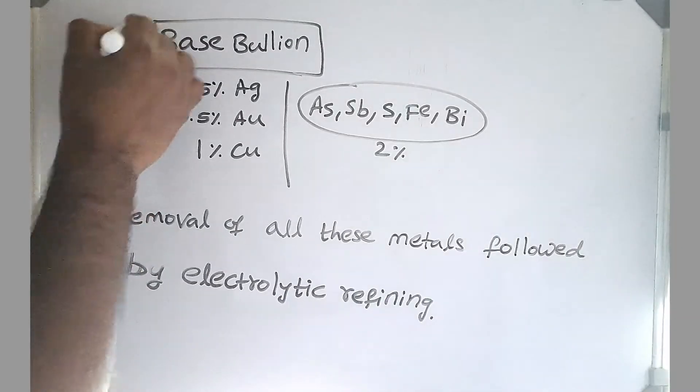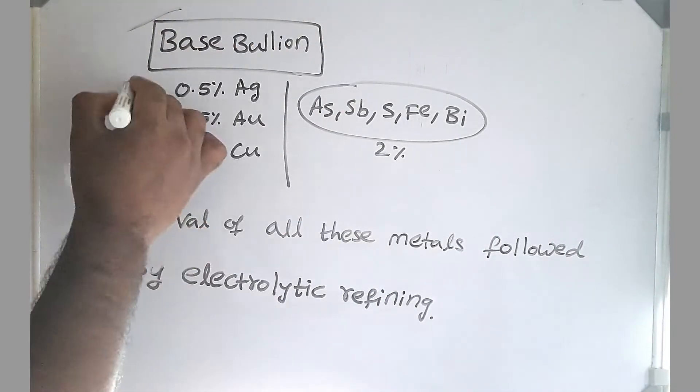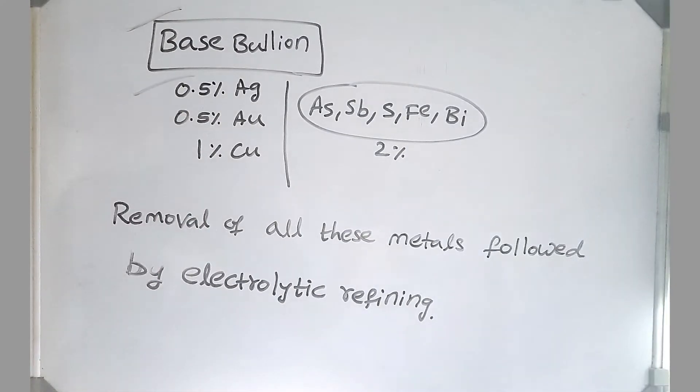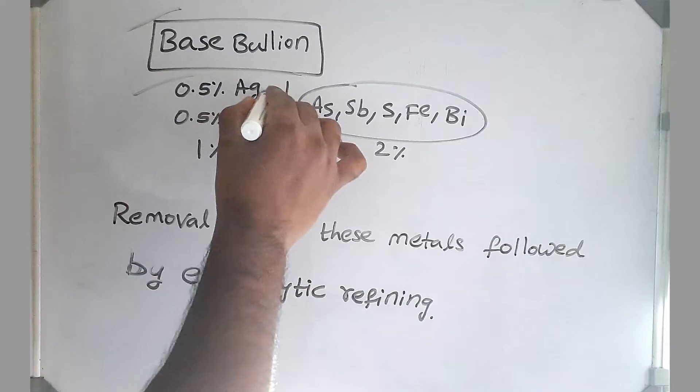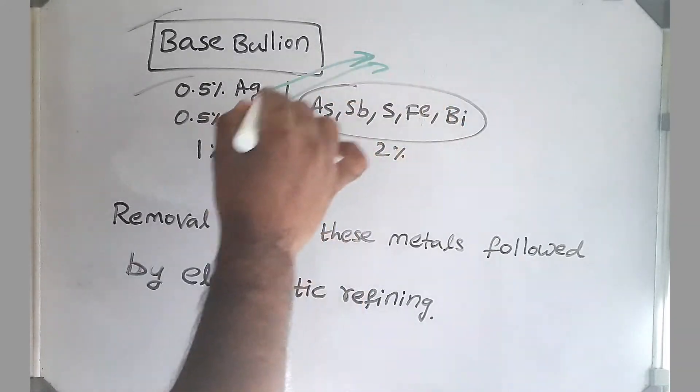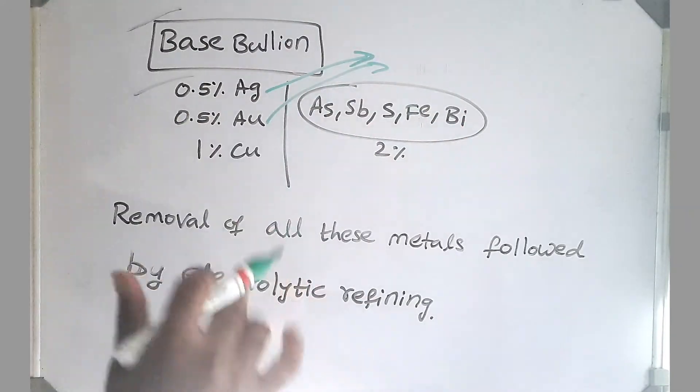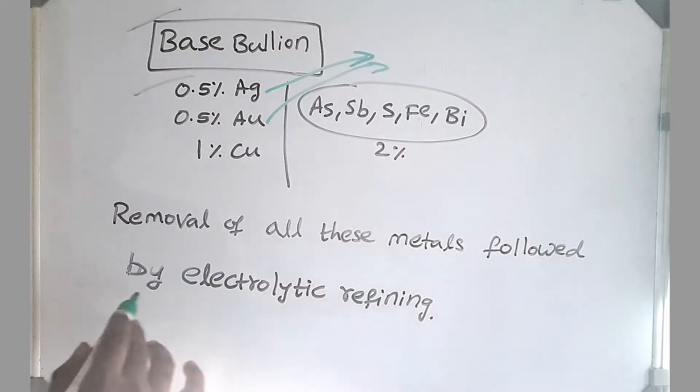The base bullion we got in our blast furnace consists of a lot of metals, a lot of precious metals, copper and up to 4 to 5 percent consists of all these metals. So first we remove all these precious metals, silver, copper, desilverization. We have a lot of processes. We remove all these metals and then we go through electrolytic refining to produce our purest form or the desired form of lead.